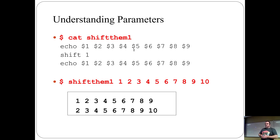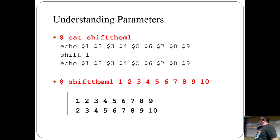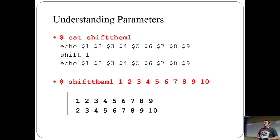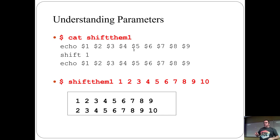Here's an example: a command called `shift_them` with arguments 1 through 10. Echoing `$1` through `$9` gives 1 through 9. After `shift 1`, it gives 2 through 10. After `shift 3`, `$1` through `$9` become 4 through 12. You always have a window of `$1` to `$9`, and shift slides that window up and down the list of arguments — similar to how old DOS needed a special driver to slide a data port across a drive larger than 512MB.